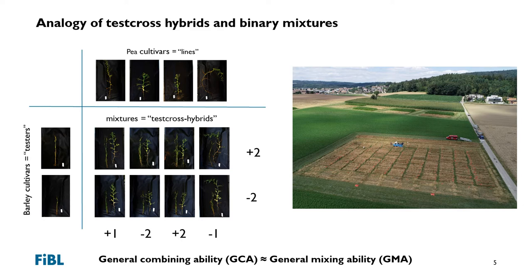Then there is the term specific mixing ability, which is the deviation from the GMA effect for specific combinations. For instance, with a GMA of plus two for barley one and a GMA of plus one for pea cultivar one, the first mixing combination would have an expected value of plus three. But if whatever we are measuring deviates from plus three — perhaps plus five, plus one, or even negative — then we have an indication of SMA, the specific mixing ability.